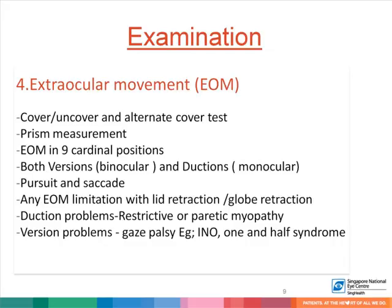Also look to see what the patient's pursuit and saccadic movements are like. Pursuit is when the patient follows a target slowly, and saccadic movements are when the patient rapidly looks to a target on one side or the other. Any extraocular movement limitation with lid retraction or globe retraction are clues to other pathologies such as Duane's syndrome or conditions such as parinaud's syndrome where there is lid retraction. If there are duction problems, consider examining further for whether they might be restrictive or paretic, and if there are version problems, look for patterns such as internuclear ophthalmoplegia or INO and one-and-a-half syndromes.